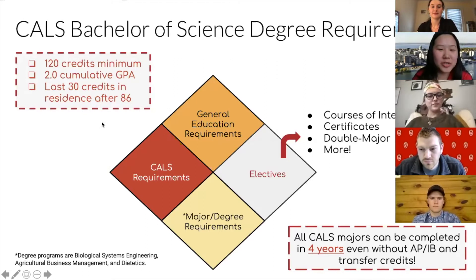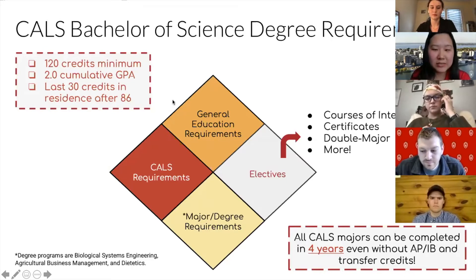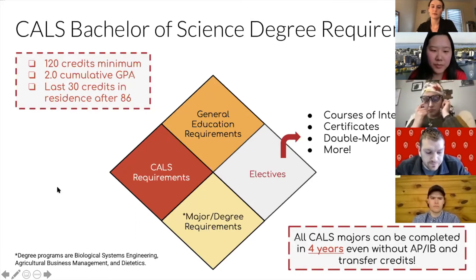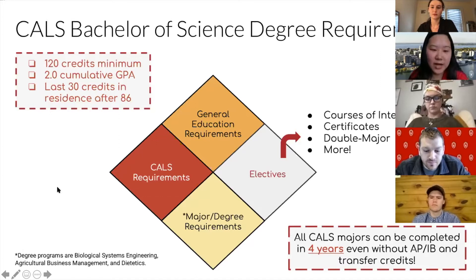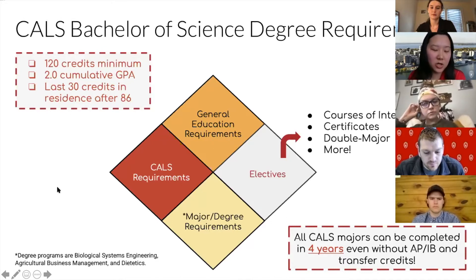To kick us off, we just wanted to quickly share some of the CALS bachelor of science degree requirements. In CALS we have about 24 majors. In order to graduate with your bachelor's degree, the minimum requirements include 120 credits minimum, a 2.0 cumulative GPA, and your last 30 credits being taken in residence after 86 credits. Once you reach 86 credits at UW-Madison you're at senior standing, and we ask that any 30 credits after that be taken at the UW-Madison campus.